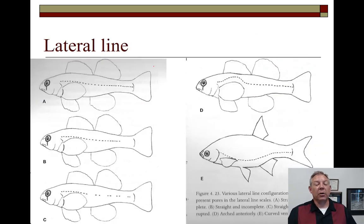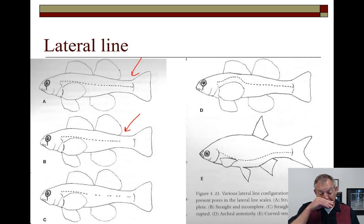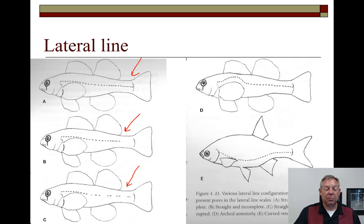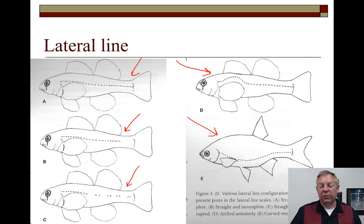We mentioned the lateral line earlier. We can describe it in different ways. A is a complete lateral line. B is incomplete — it stops before reaching the tip of the caudal region. C is interrupted — it runs the length but with big gaps. D is arched — curved upward, presumably so it's not interfered with by the pectoral fin. It can also be curved ventrally, called depressed. These are different ways to describe your lateral line.